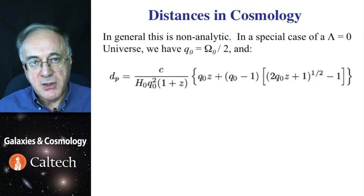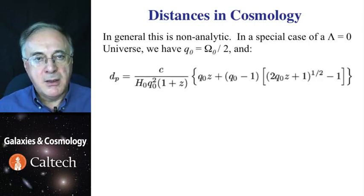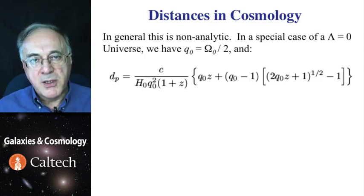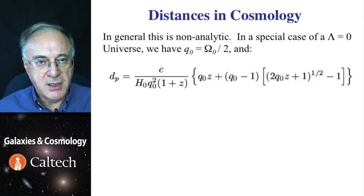In some special cases, such as when the density of the vacuum, cosmological constant, is equal to zero, there are analytical solutions. In that case, the formula for the distance is shown here. It's expressed in the older units of q0, which, remember, is the deceleration parameter, and in the absence of cosmological constant, it is equal to the density parameter divided by 2.